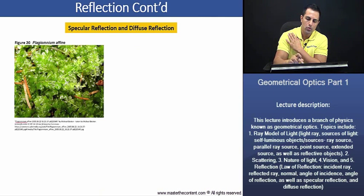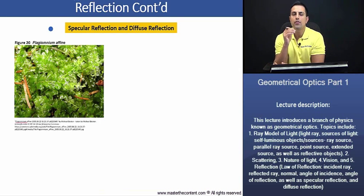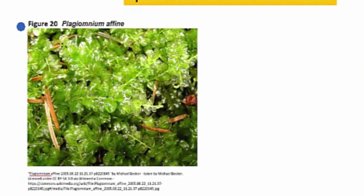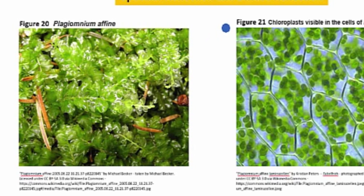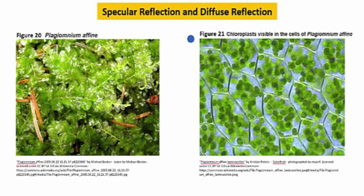Now, if you recall, chloroplasts are small organelles that are found in the cells of plants and algae, such as in this species of thyme moss, as we see here in figure 20. If we take a deeper look over here in figure 21, we can see the chloroplasts visibly in the cell.